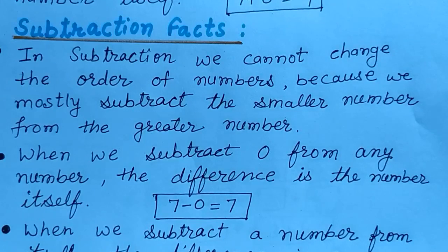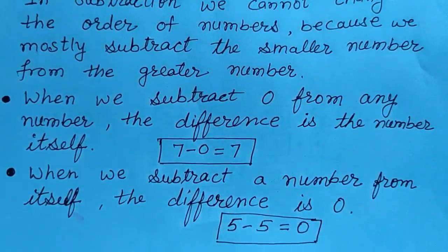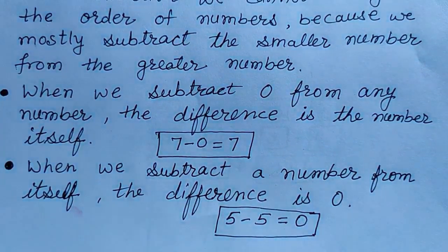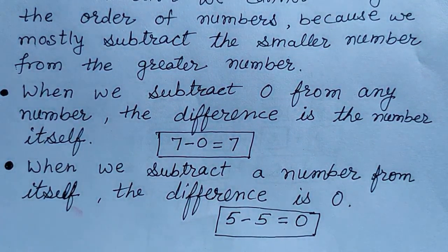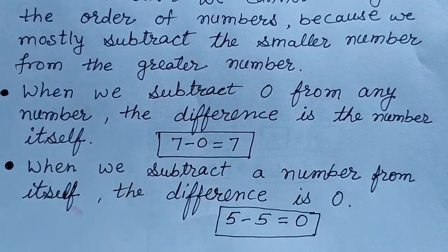The second fact is when we subtract 0 from any number, the difference is the number itself. For example, 7 minus 0 is 7. Our third fact is when we subtract a number from itself, the difference is 0. For example, 5 minus 5 is equal to 0.